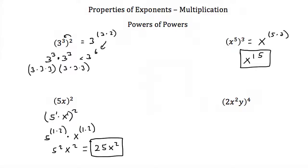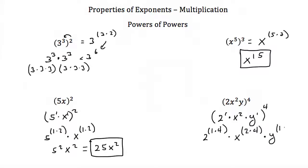Our last example: 2 times x squared times y, all to the fourth power. Think of the parentheses as 2 to the first power times x squared times y to the first power, all raised to the fourth. So we get 2 to the 1 times 4, times x to the 2 times 4, times y to the 1 times 4. That's 2 to the fourth, times x to the eighth, times y to the fourth. 2 to the fourth is 16, so our final answer is 16x to the eighth y to the fourth.